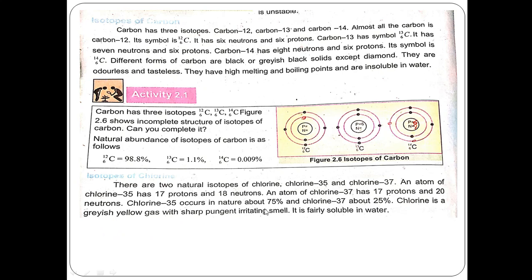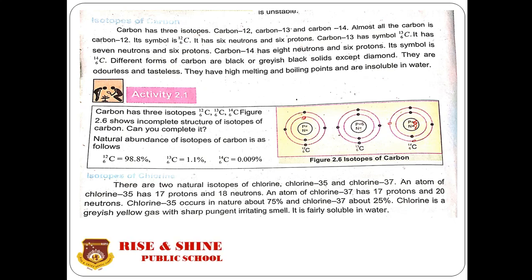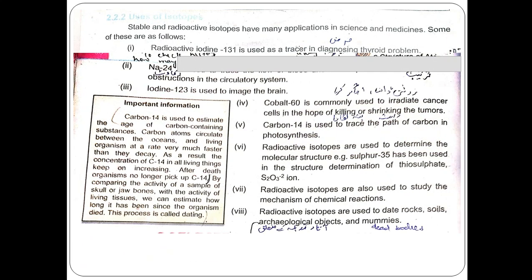Chlorine is a greyish-yellow gas with a sharp, pungent, irritating smell. It is fairly soluble in water — not completely soluble, but fairly soluble.